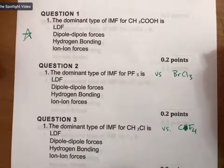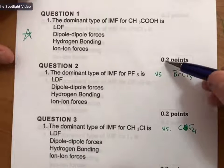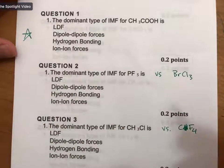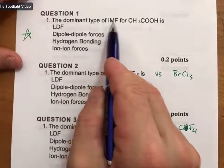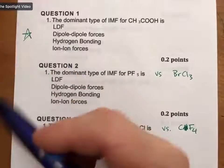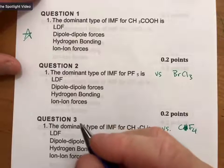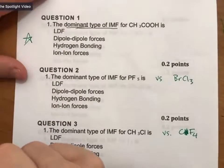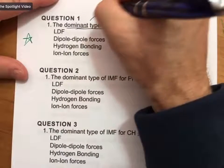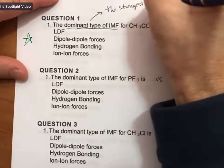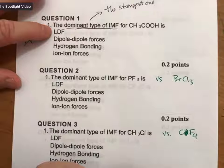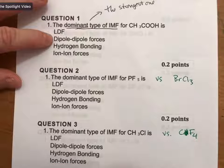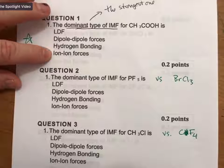This section includes 10 different sub-questions, each worth 0.2 points. We'll work through three of them. Each asks: the dominant type of intermolecular force for this molecule. The dominant IMF is the strongest one. So if LDF is the strongest, you'd circle that; if it has dipole-dipole forces, that would be next — all the way down to ion-ion.